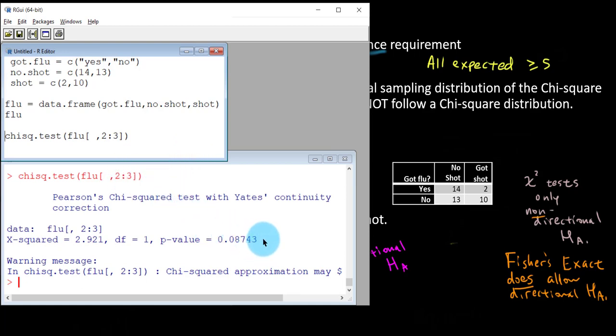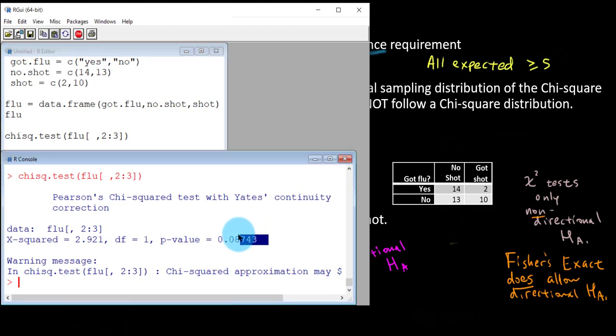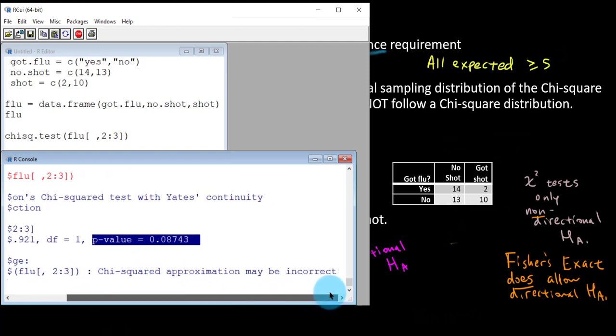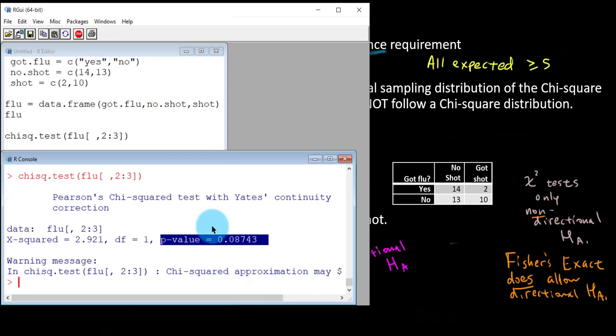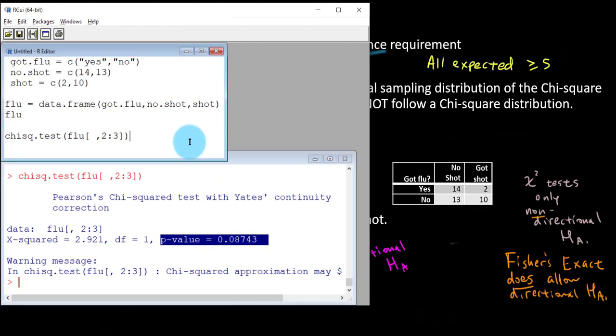So as we did in the previous video, we would probably charge right over to the p-value and start making our conclusions. However, notice there is a warning message. The chi-square approximation may be incorrect. That is a warning to you that the requirements for this test might not be satisfied. Remember we need to now go look at the expected values, dollar sign expected, for this test. And because we got that warning, I bet you one of these expected values is going to fall short of the value five.